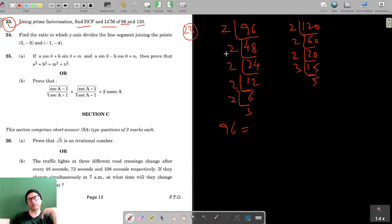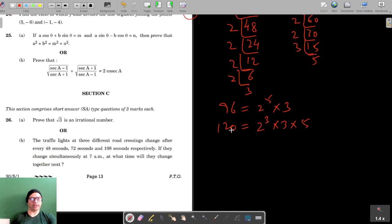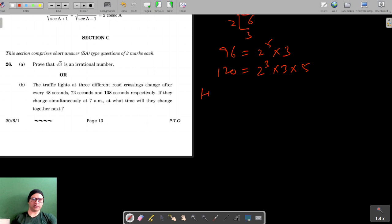So that means 96 is equal to 2 raised to the power 5 into 3, and 120 is equal to 2 cubed into 3 into 5. We have to find the HCF and LCM.